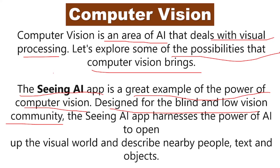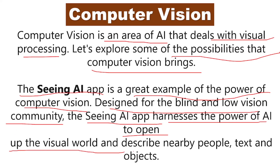This app is designed for the blind and low vision community. The Seeing AI app harnesses the power of AI to open up the visual world and describe nearby people, text, and objects. With the help of this app, the computer system can describe who is standing nearby, what text is present, and what objects are around. It can discriminate between people, texts, and objects.